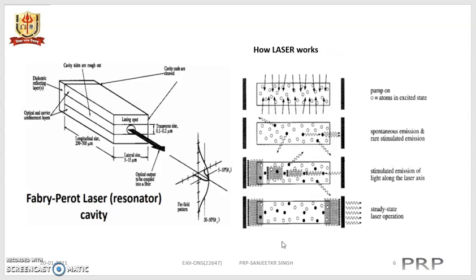How the laser works is depicted in four diagrams. First, pumping — where the elements are raised to the excited level by the supply of external energy. Second, the excited state is not the normal state, so the atom tries to fall back to the stable state, giving out photons — spontaneous emission or stimulated emission — where the photon generated is incident on another atom and produces an additional photon. Third, stimulated emission of light along the laser axis is shown, and fourth is the steady-state laser operation.